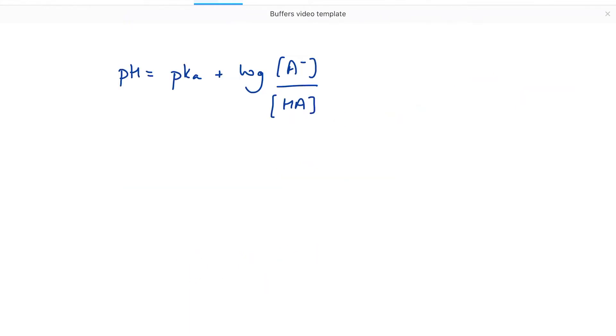Alternatively, using the Henderson-Hasselbalch equation, pH equals pKa plus log ratio A- over HA.